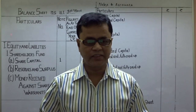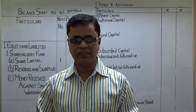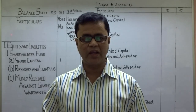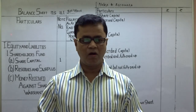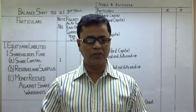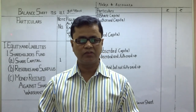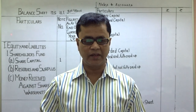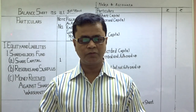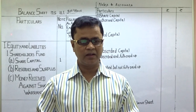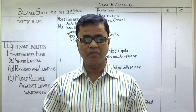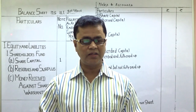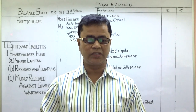Tector India Ltd is registered with authorized capital of Rs 10 lakh, divided into 1 lakh equity shares of Rs 10 each. The company issued 50,000 equity shares at a premium of Rs 5 per share. Rs 2 per share payable with application, Rs 8 per share including premium on allotment, and the balance amount on first and final call.